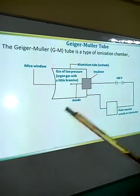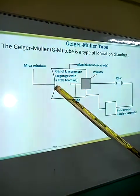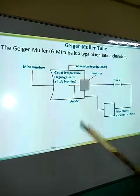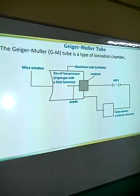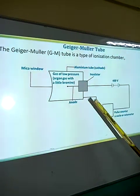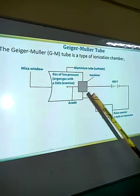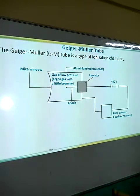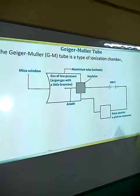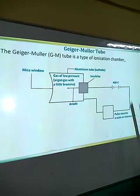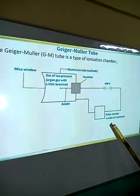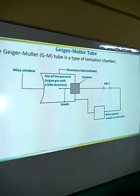We can see the various parts here. There is the mica window, normally thin — sometimes you find it written as 'thin mica window.' There is an aluminum tube which acts as the cathode. Then there is the anode. We have an insulator there. Then we have a PD of around 500 volts.